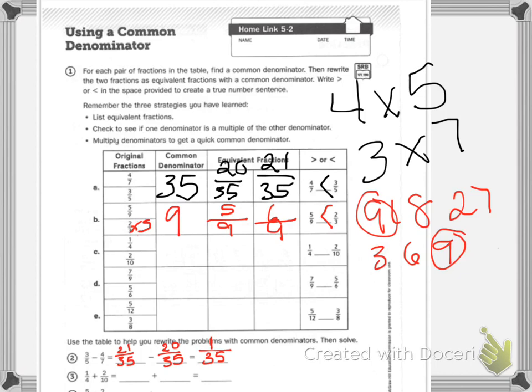Then you have 1 fourth plus 2 tenths, and your last one is going to be 5 ninths plus 2 thirds. I can't see, I moved my shadow. So that is your homework tonight.